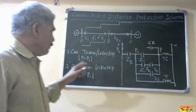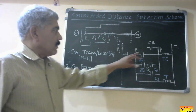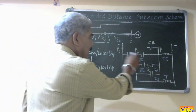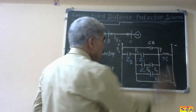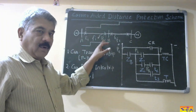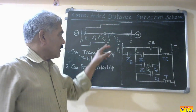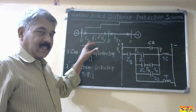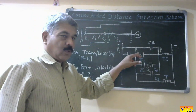Let us start with the first scheme — carrier transfer or carrier intertrip scheme. In this scheme, the carrier receive relay contact, which is normally open, is connected at point P, between point P and P1. When fault F1 occurs — that is, the fault occurs in the second step and it is an internal fault — the local end relay R2 will transfer a carrier signal to R1 so that the carrier receive relay immediately closes its contact.